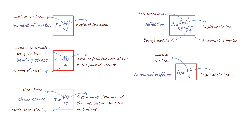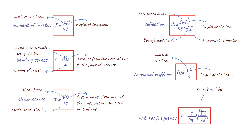Continuing on, we have the formula for natural frequency of a beam. This is represented by the equation where E is the Young's modulus of the material, I is the moment of inertia of the beam, m is the mass of the beam, and L is the length of the beam. This formula is used to calculate the natural frequency at which a beam will vibrate.